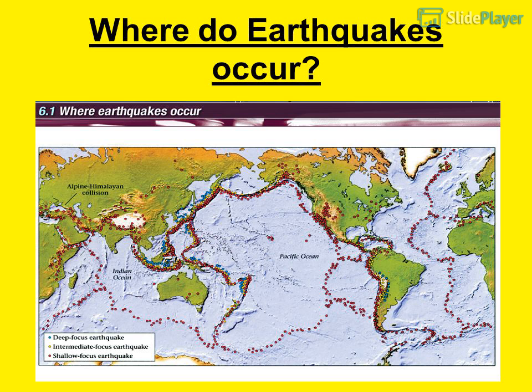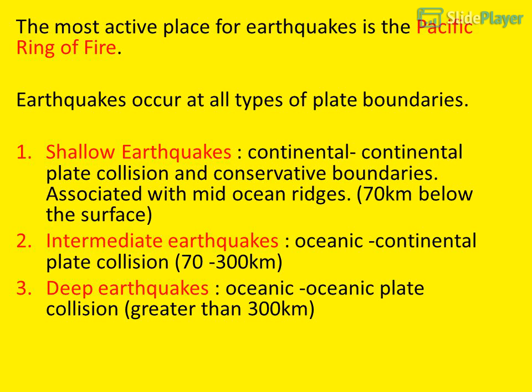Where do earthquakes occur? The most active place for earthquakes is the Pacific Ring of Fire. Earthquakes occur at all types of plate boundaries. Shallow earthquakes are associated with continental-continental plate collision, conservative boundaries, and mid-ocean ridges — occurring 70 km below the surface. Intermediate earthquakes occur at oceanic-continental plate collisions, at depths of 70–300 km.